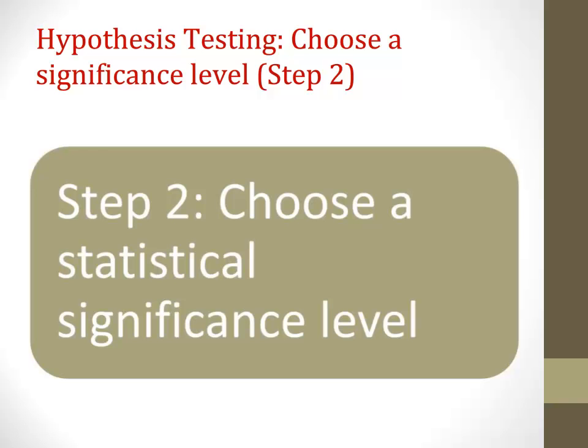Statistical conservatives will tell you that if your alpha level is not less than 0.05, your results are inconclusive. However, experts such as Jacob Cohen say that 0.05 is not the cliff — sometimes it's acceptable to have a higher significance level. For the purpose of this tutorial, we're going to use the convention of 0.05.